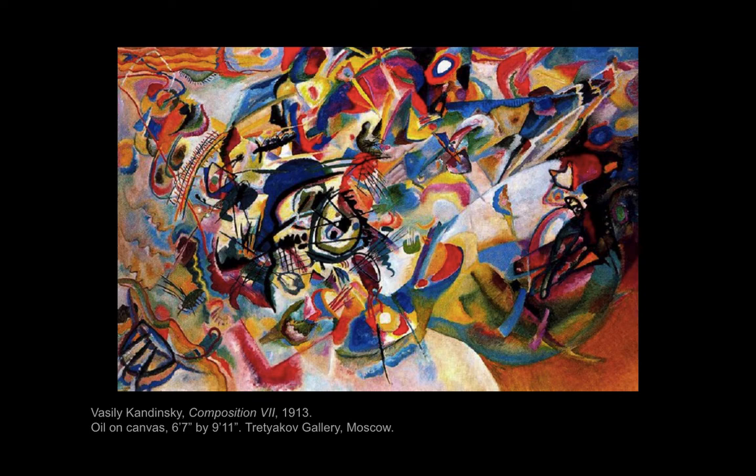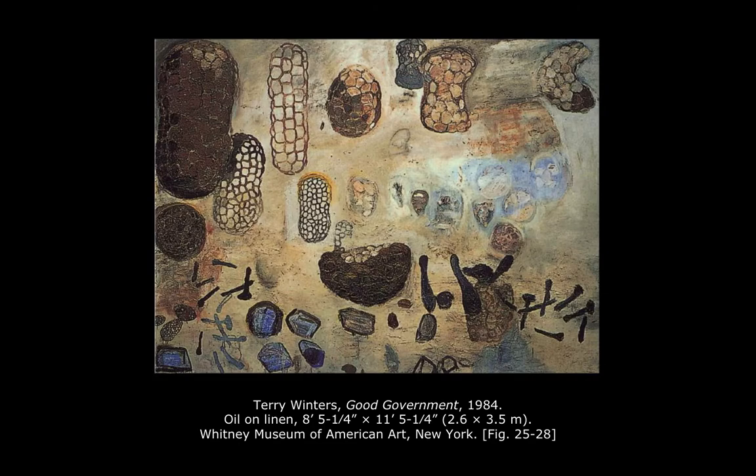Both Kandinsky and Winters have painted botanical forms like seeds, buds, and spores. For example, in this painting titled Good Government from 1984, seeds, buds, and spores form the central imagery. The color palette of the work also recalls the subtle greens and browns of the natural world.